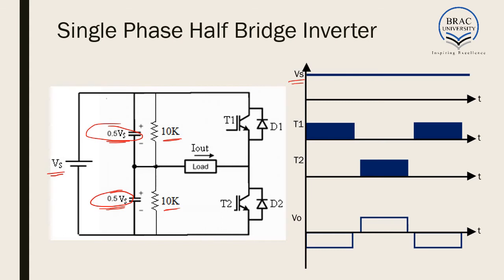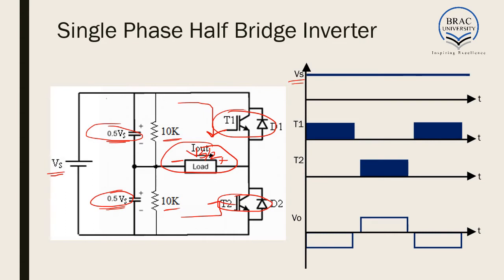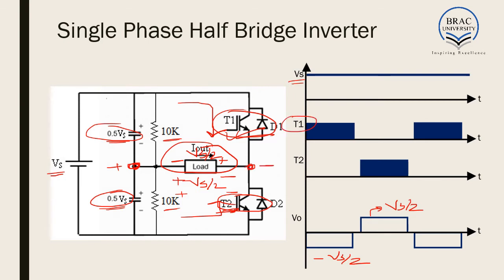Theoretically, when this switch is on, it becomes short-circuited. As a result, the voltage across the load should be plus VS/2. And again when the other switch is on, this acts as a short circuit and the voltage across the load should be minus VS/2. So theoretically, when switch T2 is on we get a positive voltage of VS/2, and when T1 is on we get a negative voltage of minus VS/2. By switching on T1 and T2 at definite intervals, we get plus VS/2 and minus VS/2, which is an alternating or AC voltage.